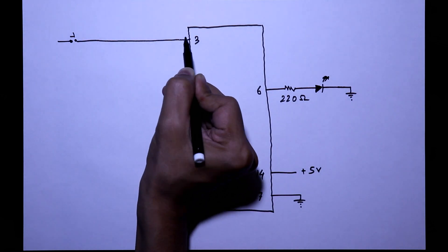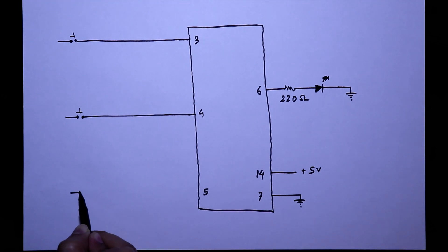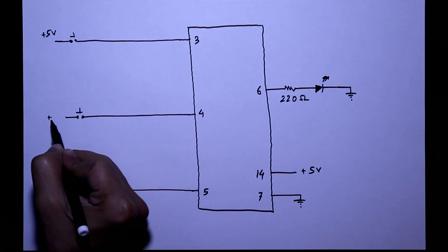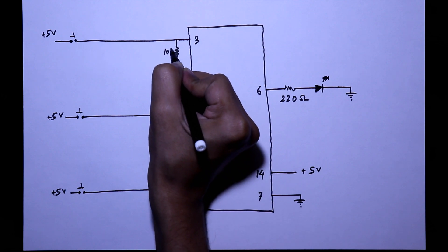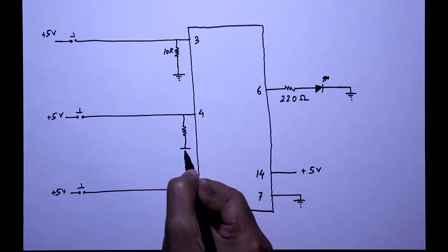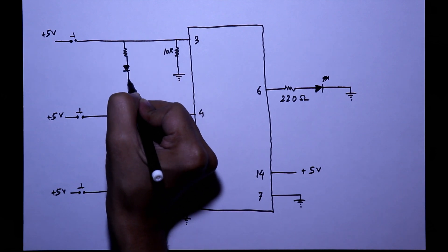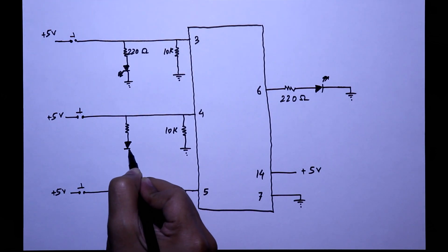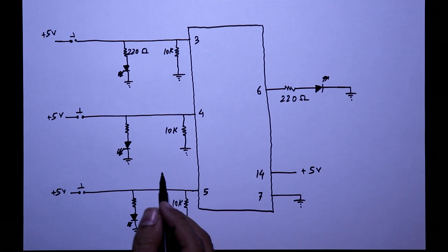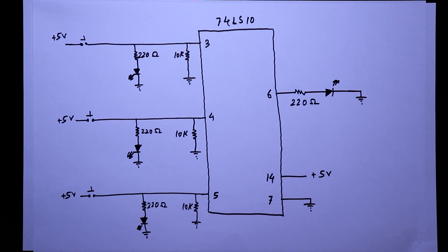With the input pins we are connecting a switch and the other pin of the switch is connected to the plus 5 volt. With the input pins we are connecting pull down resistors. The value of the pull down resistor is 10 kilo ohms and to see the input we are connecting LEDs with series resistors of 220 ohms.